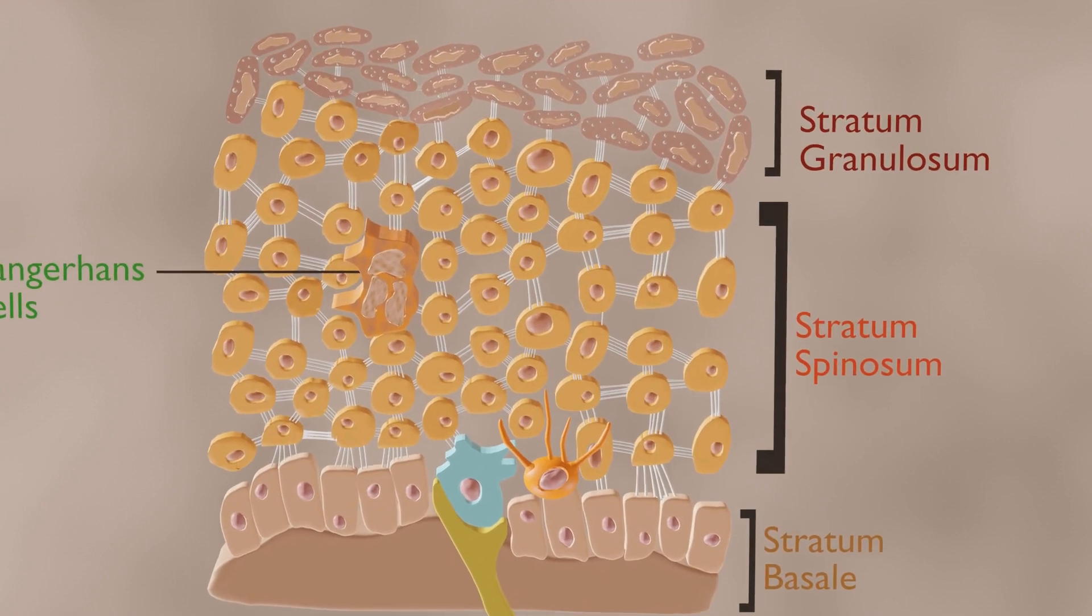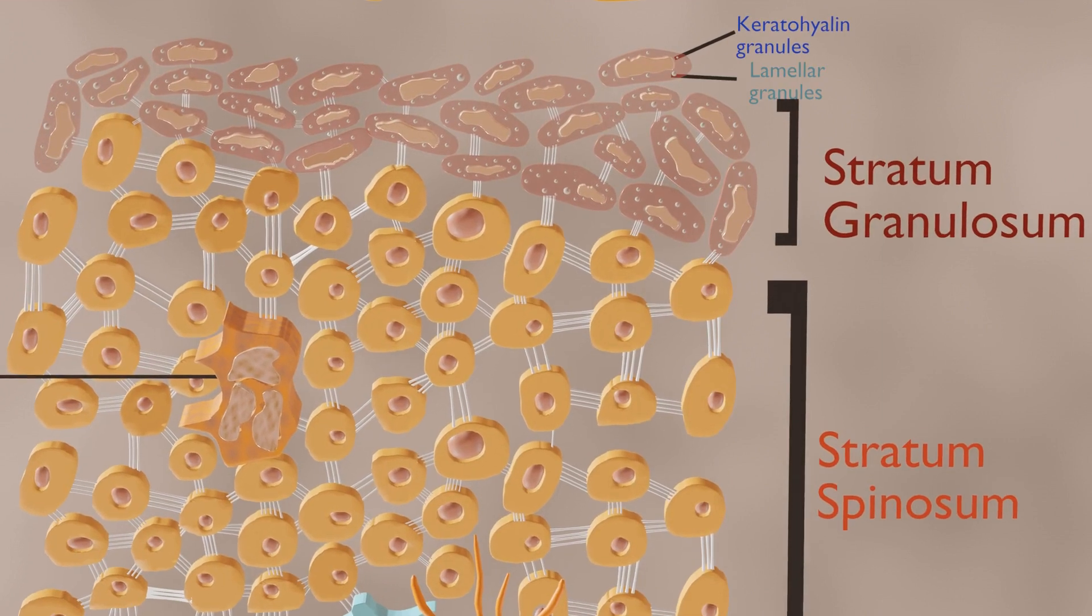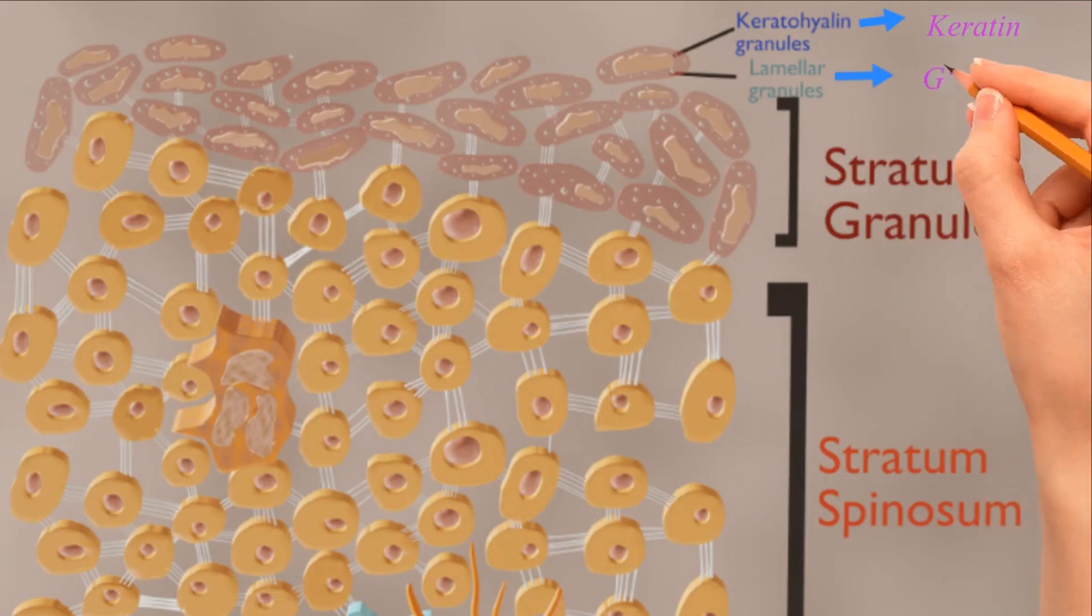Stratum granulosum has 3-5 cell layers and contains diamond-shaped cells with keratohyalin granules and lamellar granules. Keratohyalin granules contain keratin precursors that eventually aggregate, cross-link and form bundles. The lamellar granules contain glycolipids that get secreted to the surface of the cells and function as a glue, keeping the cells stuck together.